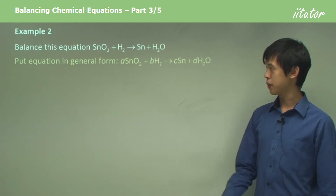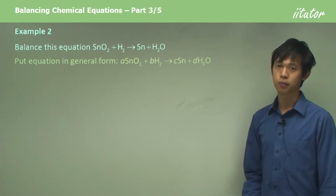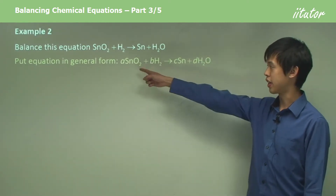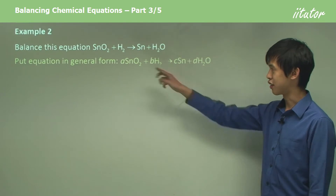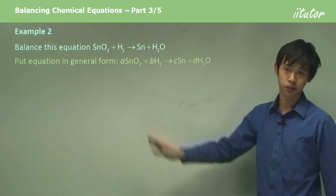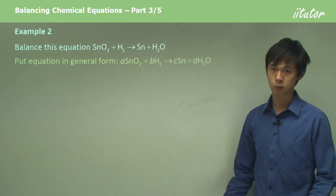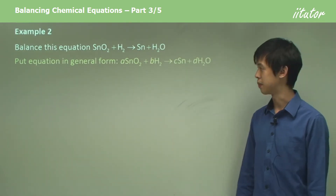So first we put it in general form. We just write A, B, C, and D in front of each of the chemicals. Very simple first step.